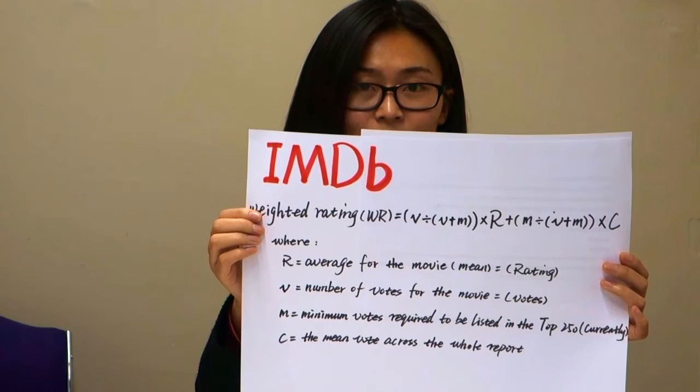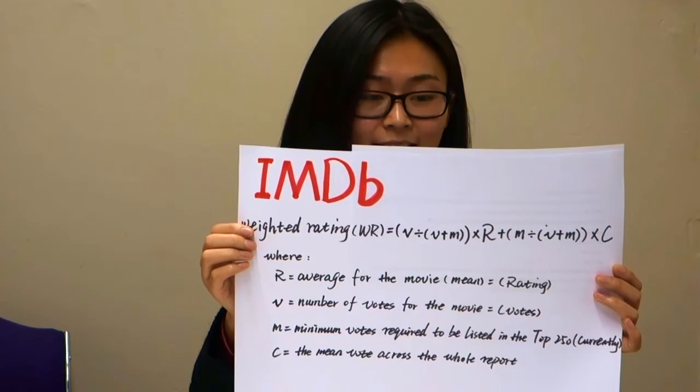What does weighted average mean? A weighted average means that some votes would have more weight than others in the calculation. So how does IMDB calculate the weighted rank of the top 250 rated charts? The following formula is used to calculate the top 250 rates. The weighted rating (WR) is equal to V divided by V plus M, multiplied by R, plus M divided by V plus M, multiplied by C.